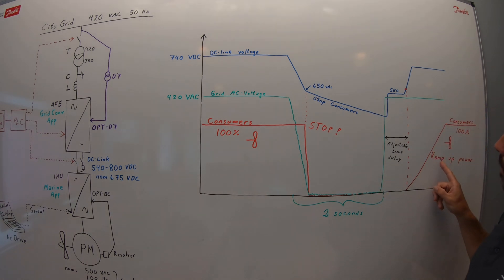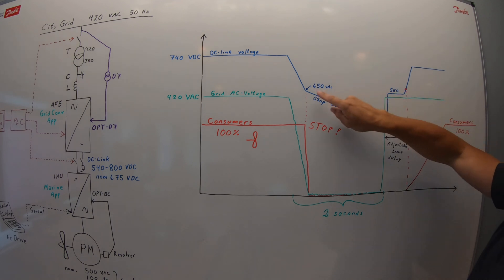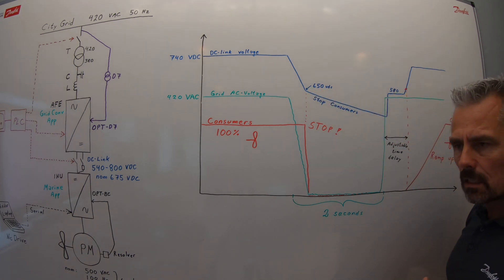Then the active frontend will restart automatically and the 740 volt DC link voltage will be back. Our consumers, they will, on the same level as this, restart the propulsion and consumers.